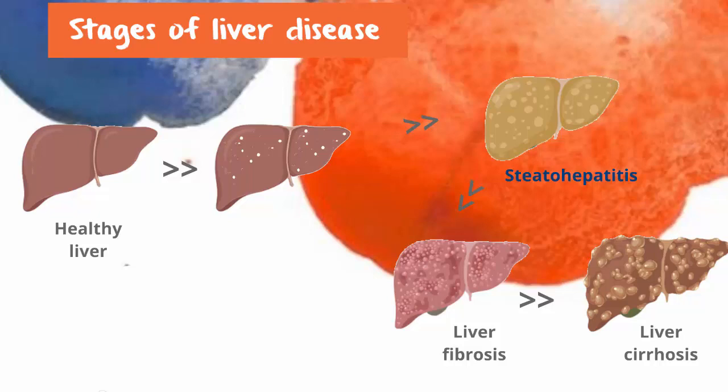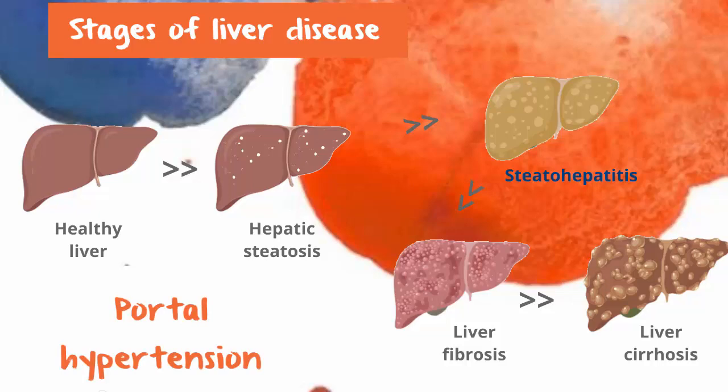The condition starts off slowly. At first, liver cells are carrying a little extra fat. This is called steatosis. It's not ideal, but not hugely problematic. The liver is still able to do the gazillions of reactions it's tasked with, but it can create a little angst.